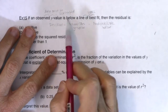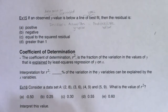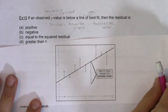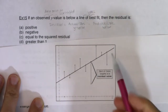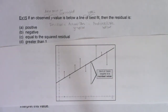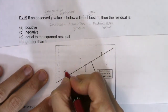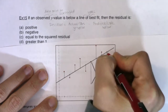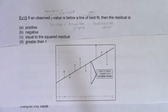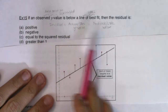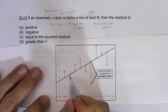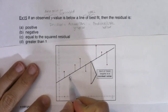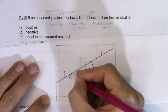They're telling us that the observed value is below the LSRL. I just went to Google Images and searched for a residual plot to give you a visual. So we have our LSRL and a bunch of data points. This observed value is below the line of best fit, and here's our residual — it's this vertical drop from our LSRL down to our observed y value.